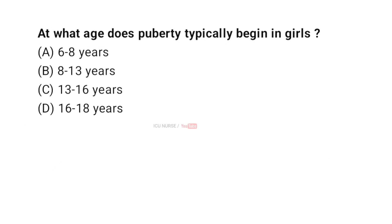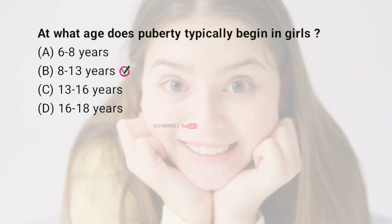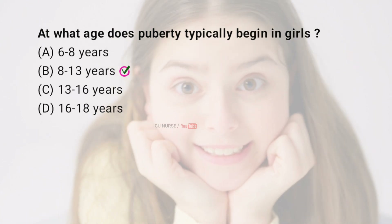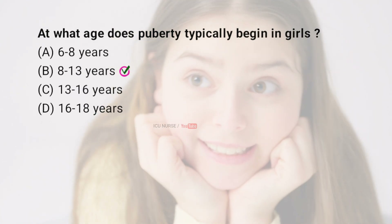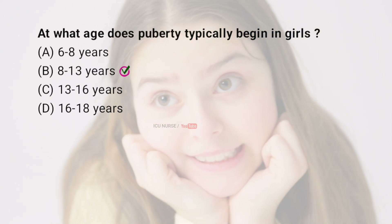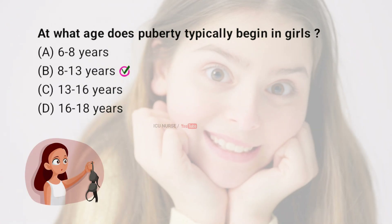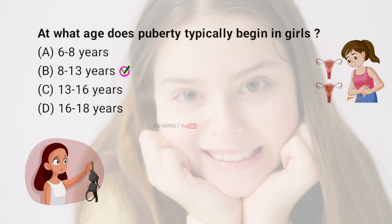At what age does puberty typically begin in girls? A: 6 to 8 years, B: 8 to 13 years, C: 13 to 16 years, D: 16 to 18 years. The correct answer is B: 8 to 13 years. Puberty in girls usually begins between the ages of 8 and 13, marked by physical and hormonal changes including the development of breasts and the start of menstruation.